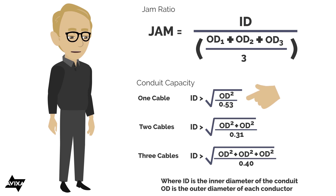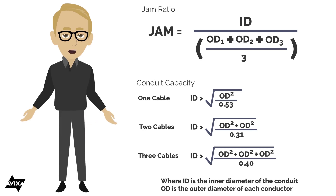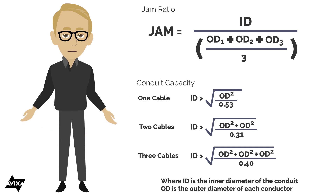On the math sheet you'll see conduit capacity, and you'll see differences if I'm installing just one cable, two cables, or three or more cables. One cable allows up to 53% fill — this could be a single cable or a multi-pair under a single jacket. Two cables allows 31% fill, and three or more allows 40% fill. Your local regulations may vary slightly, but you'll see numbers in that neighborhood.